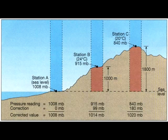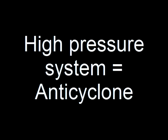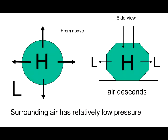If the surface air pressure in a certain region is relatively high, we call this a high pressure system or an anticyclone. By definition, the surrounding air of anticyclones is characterized by relatively low pressure.